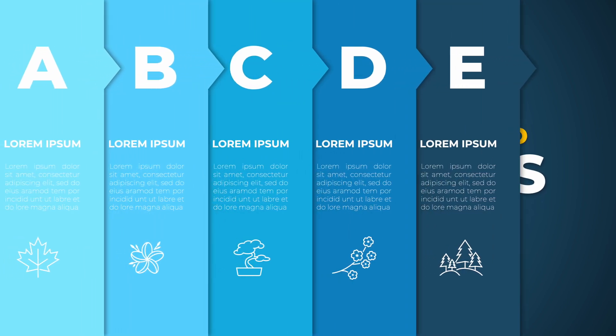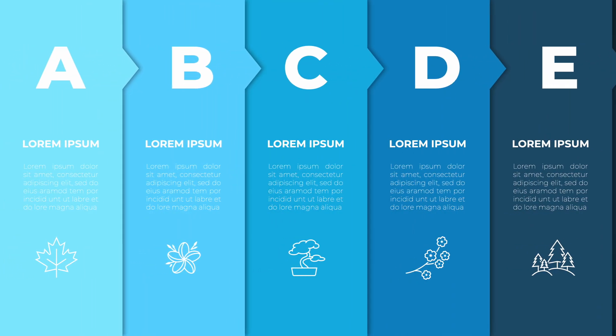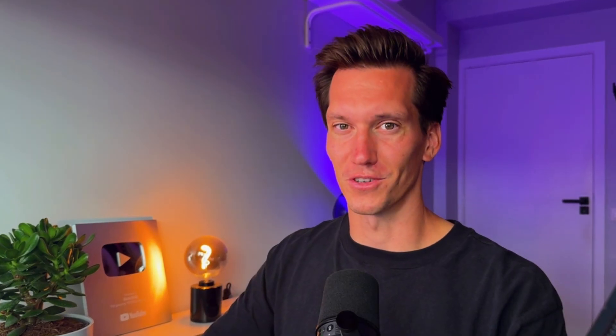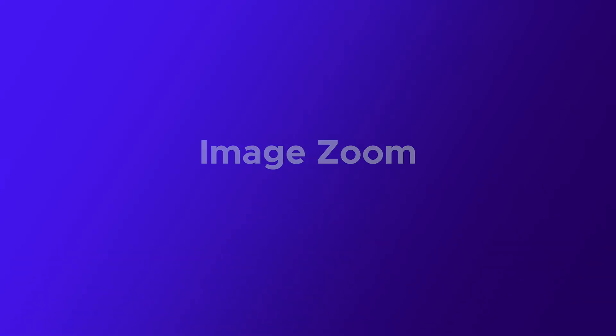We can go so much further. In the next step I want to step away from text and shapes because we want to make our presentation visual. So we're going to look at how we can create something visually impressive with images on our slides. That brings us to step number three: the image zoom effect.